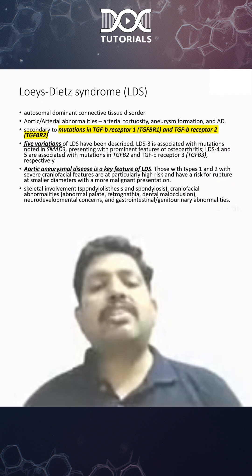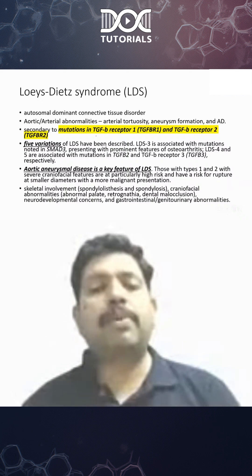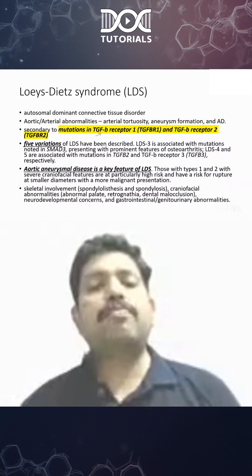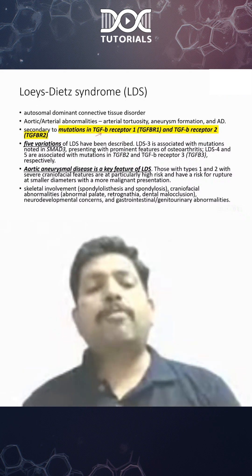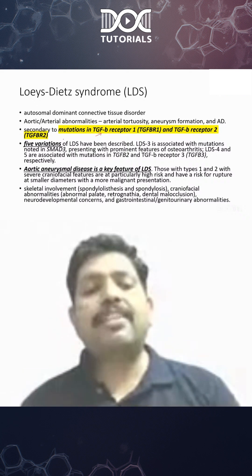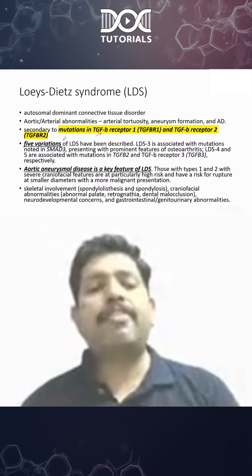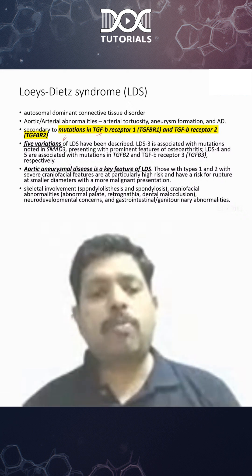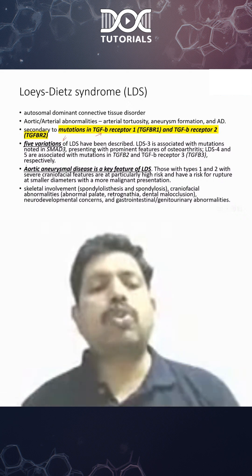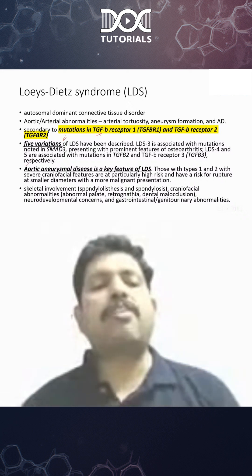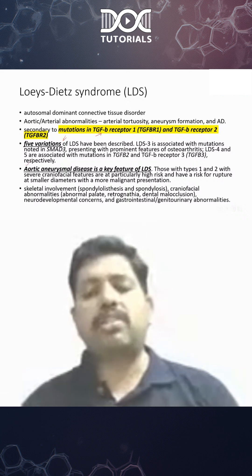The second one is Loeys-Dietz syndrome. This also has a similar mechanism because it is also TGF-beta signaling with receptor mutations. There are 5 variants of Loeys-Dietz syndrome, and aortic aneurysm is seen in almost all of them. It is a key feature of Loeys-Dietz syndrome.